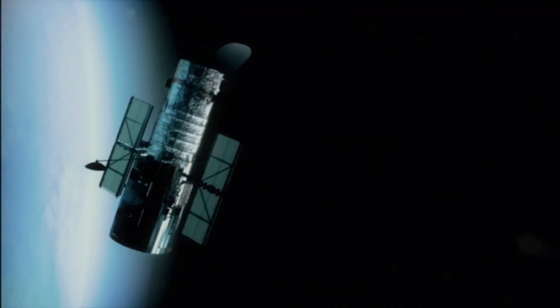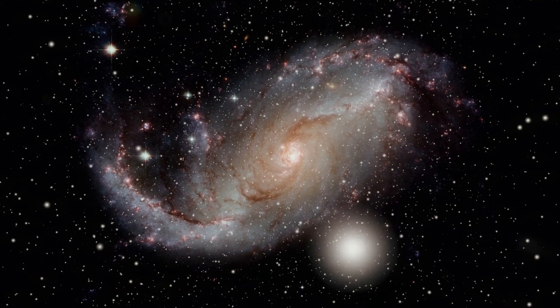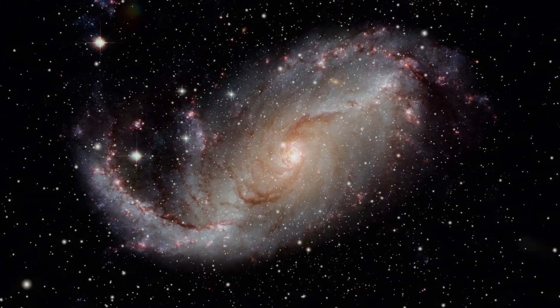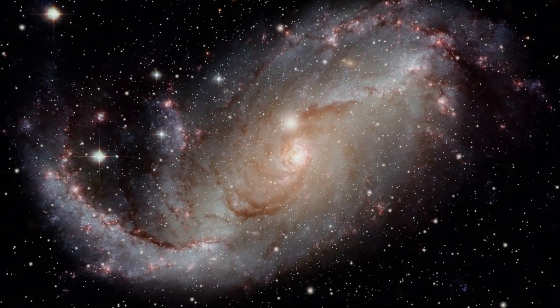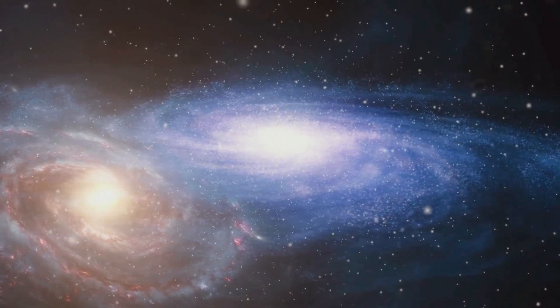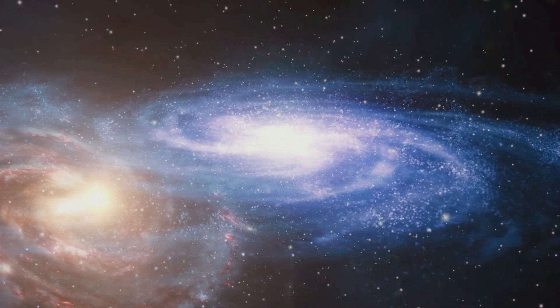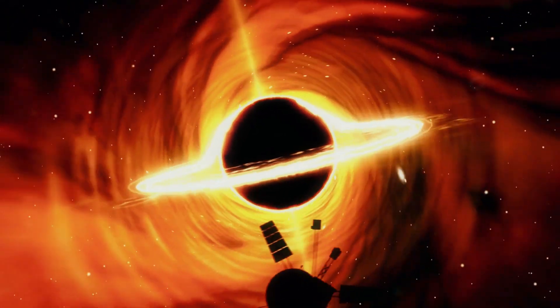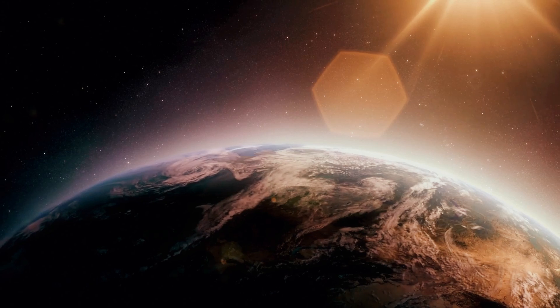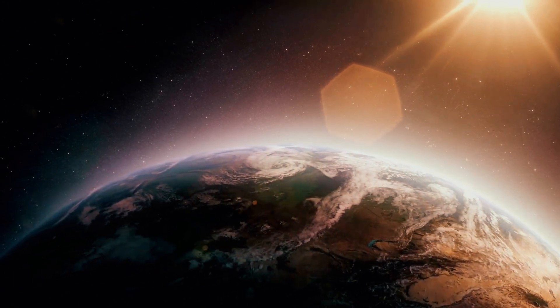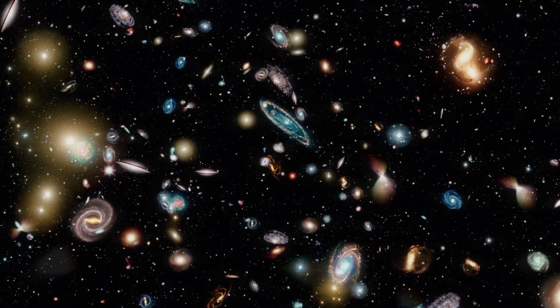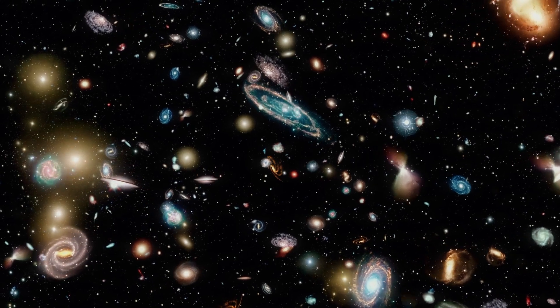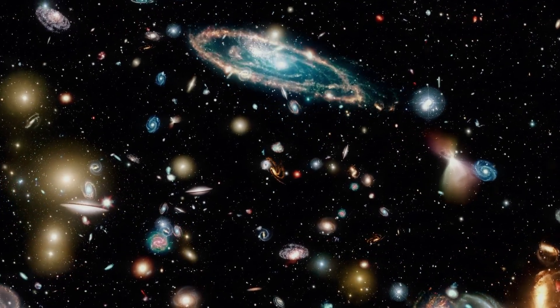But how exactly do these simulations work? Well, scientists input data about the mass, size, and gravitational forces of the galaxies involved. The simulations then map out how the galaxies interact over time, predicting the paths of stars, gas clouds, and even entire solar systems. These models help scientists answer key questions like: could a galactic collision spark new star formation? Will black holes grow as galaxies merge? And most importantly, what will happen to Earth and the solar system during the Milky Way collision with Andromeda? The fascinating thing is that these simulations can be tweaked and run again with slightly different parameters, giving us a clearer understanding of the wide range of possible outcomes.